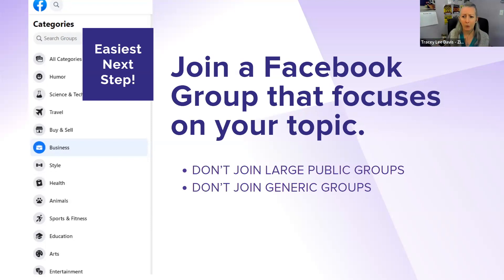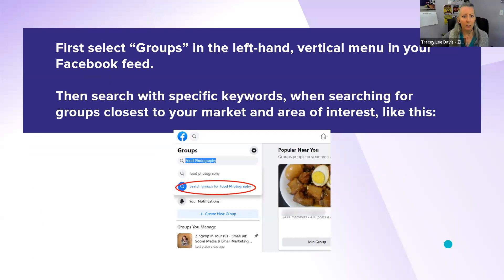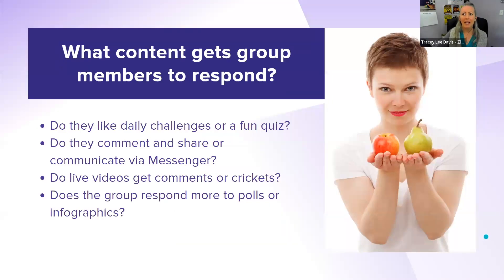For example, you might join the food photography tricks group if you teach food photography, since that's going to connect you with people who are looking to do more with their food photography — people interested in learning techniques and pro tips. The important part is not just being in these groups, but actually doing something with them. So actually engage once you get there. Focus on paying attention to what type of content incites these group members to respond. Do they like daily challenges? Or will they prefer a fun quiz? Will a tough-talk post get someone to comment and share? Or are they most likely to communicate through Messenger?